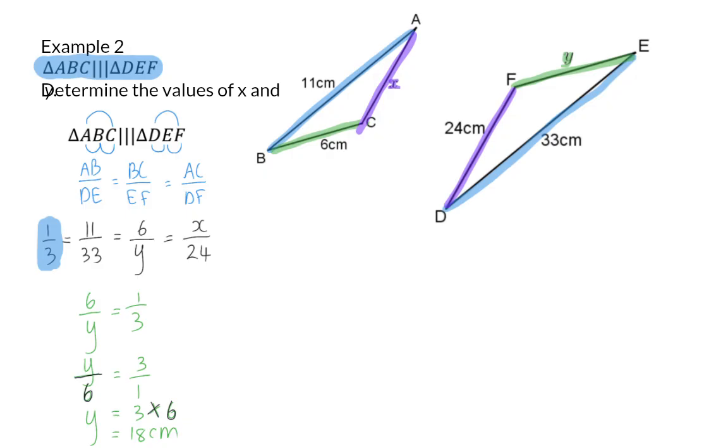Or you could have realized that these are two equivalent fractions. And because 1 became 6 times bigger, 3 also has to become 6 times bigger, and 3 times 6 is 18.